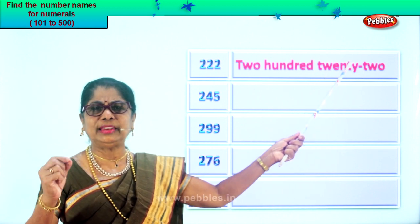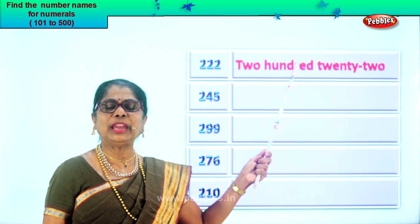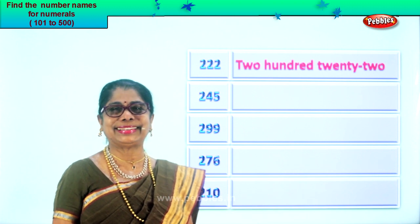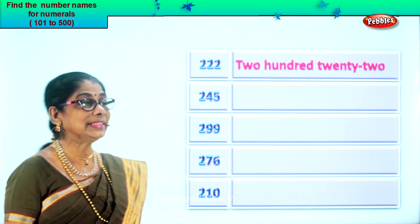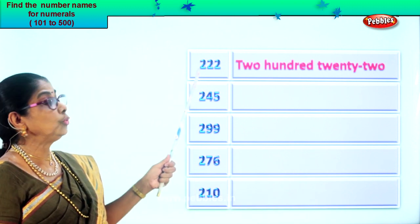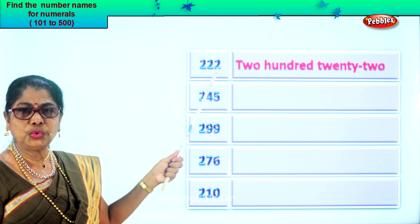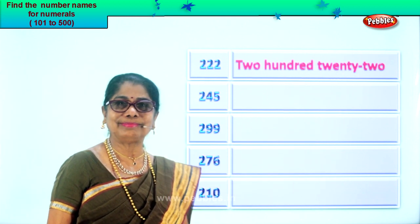The spelling of twenty should be correct, and the spelling of hundred should be correct. That's it. Once again: two hundred twenty-two.